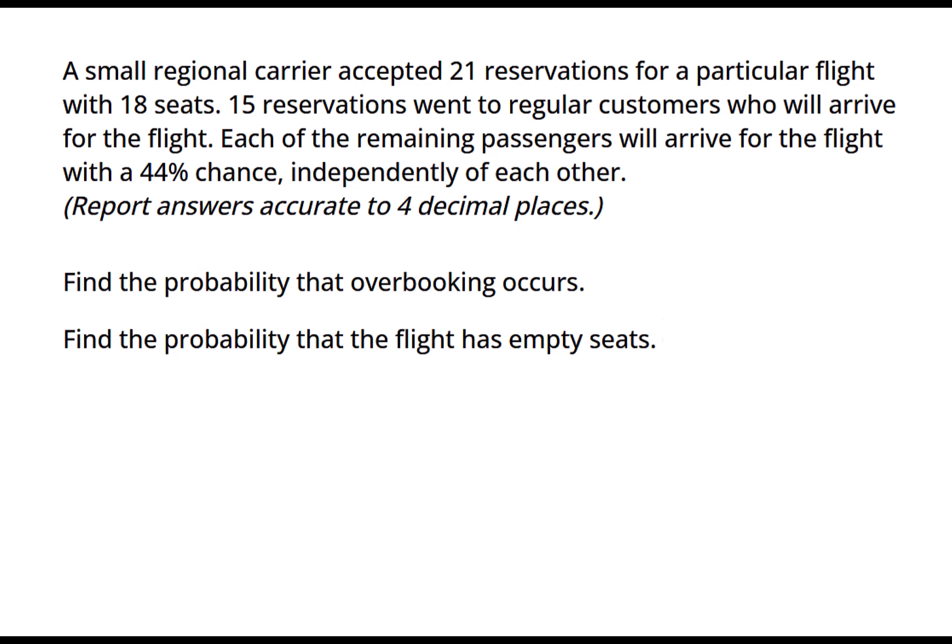The other parts that are important - we have a fixed number of trials because there are only a certain number of reservations that were sold. Also, the remaining passengers arrive with a 44% chance and that's independent of each other, so that probability is not going to change from one to the next. So this is a binomial distribution. Let's make sure we understand the question first.